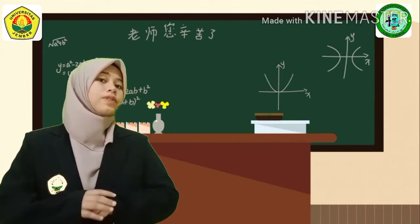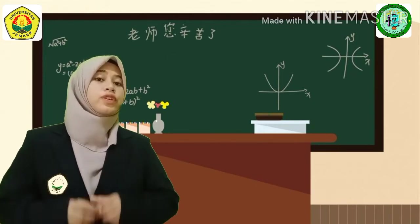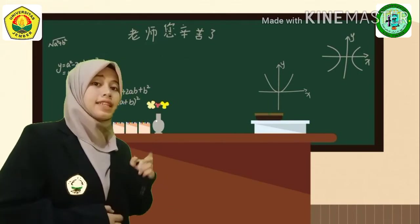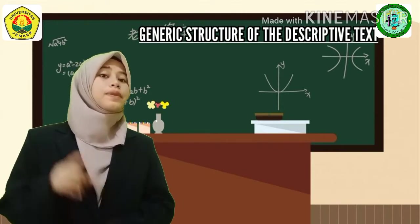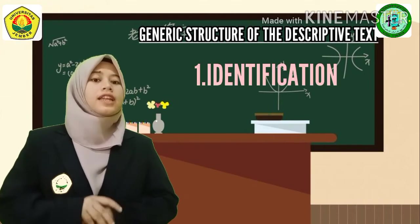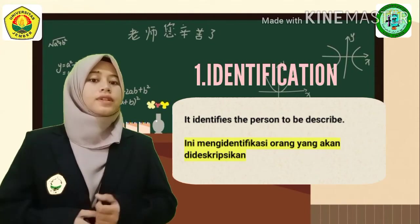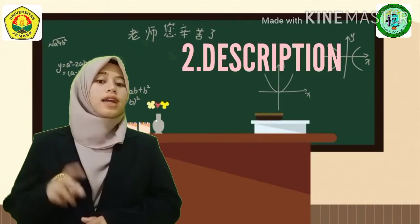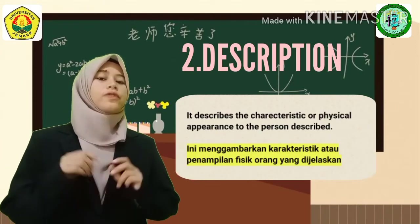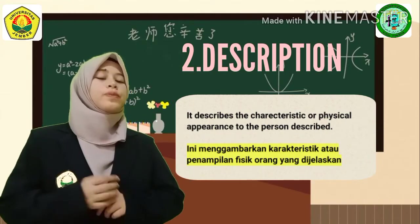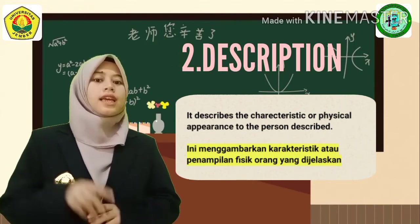When writing descriptive text, there are some generic structures to follow. Selanjutnya kita akan belajar tentang generic structure of descriptive text. Yang pertama yaitu identification — identify the person to be described, mengidentifikasi person untuk dijelaskan. Yang kedua, description — describes the characteristics of the physical appearance of the person described.